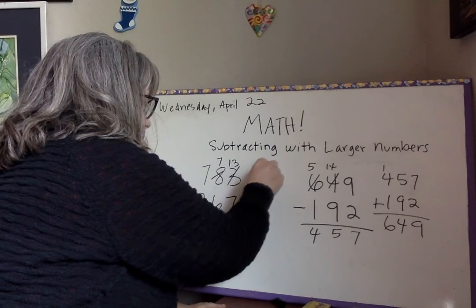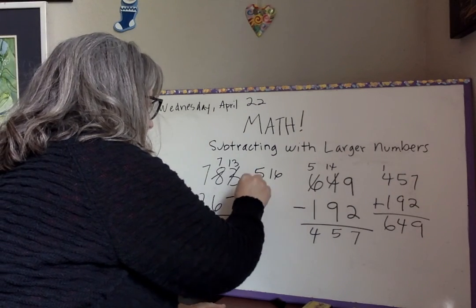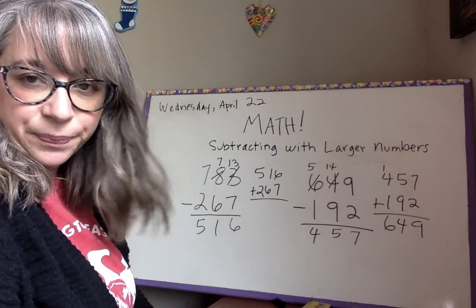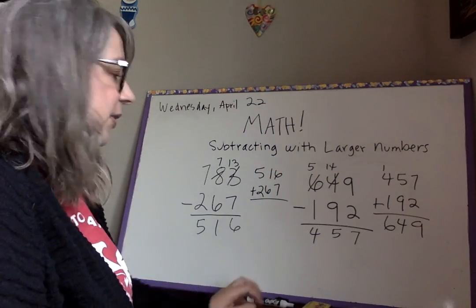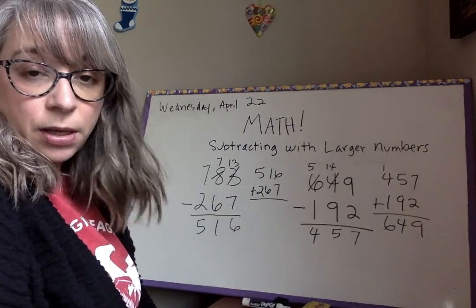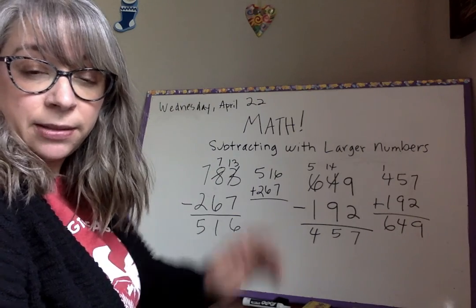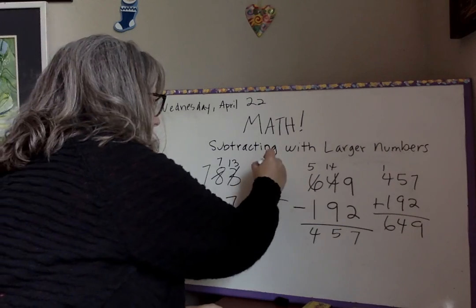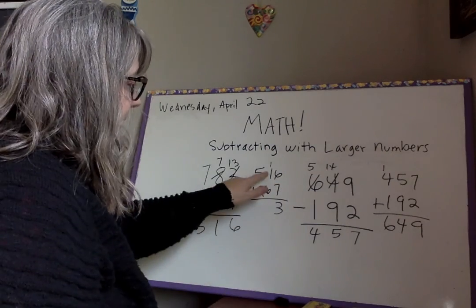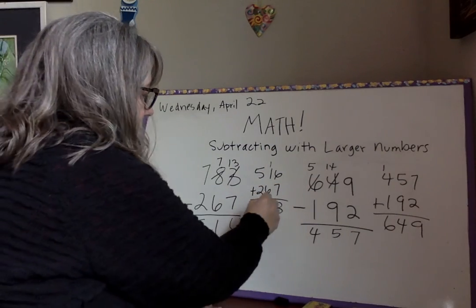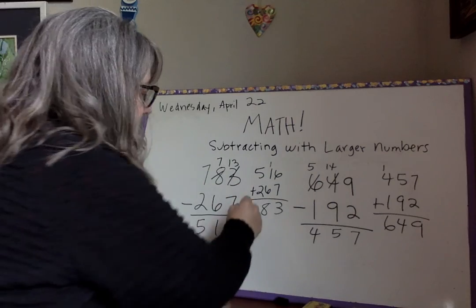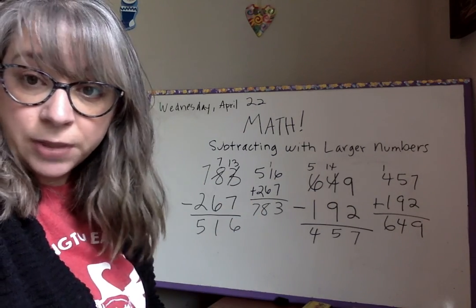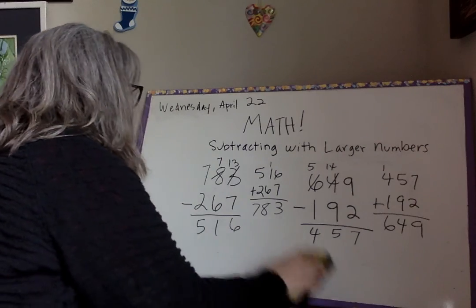Let's check by adding. Five hundred and sixteen plus two hundred and sixty-seven. Six plus seven is thirteen, carry one. One plus six plus one is eight... carry one. Five plus two plus one is eight — wait, seven hundred and three. Seven hundred and three. Rock on friends, let's keep moving.